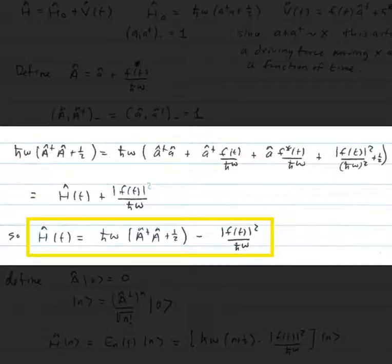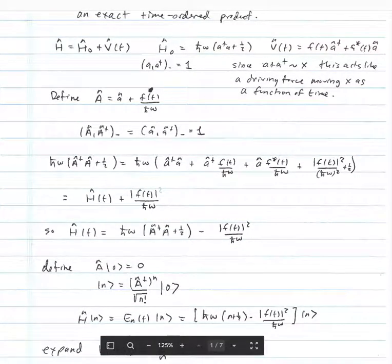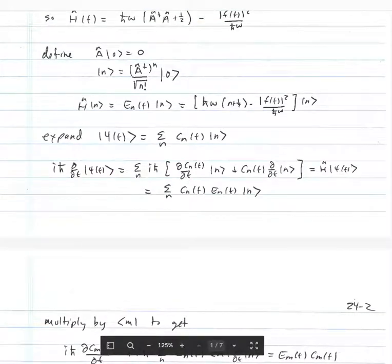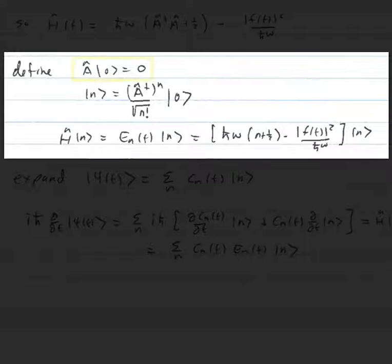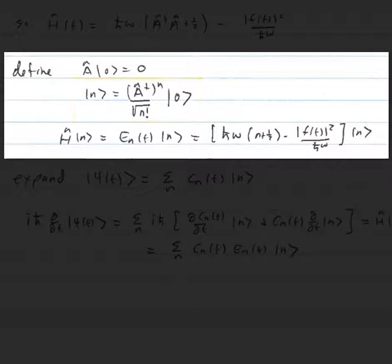H(t) equals ℏω(A†A + 1/2) minus |f(t)|²/(ℏω). It looks like we have removed the time dependence from the operators themselves, but of course these operators do depend on time — I could have written Capital A(t). We have a lot of experience with these kinds of problems. We define the vacuum state so that a acting on it is zero, and the excited state |n⟩ equals (a†)^n / √(n!) acting on the vacuum. These are instantaneous energy eigenstates.